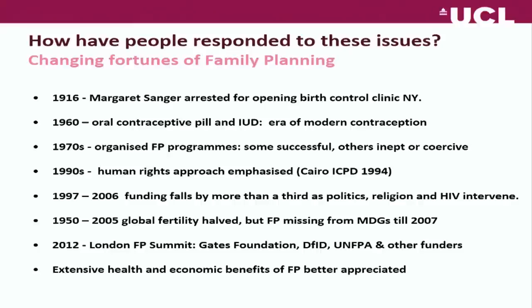The 1960s was when the pill and the IUD became widely available — the era of modern contraception. The pill transformed women's lives along with women's liberation and so on. Unlike the opposition to contraception in the US and Britain, in developing countries faced with huge growing populations, governments promoted family planning very strongly. Some programmes were popular and successful, like in Bangladesh; others were inept or coercive.